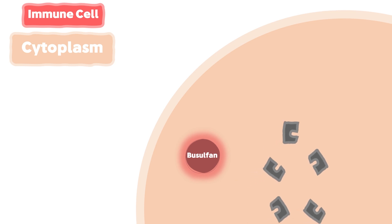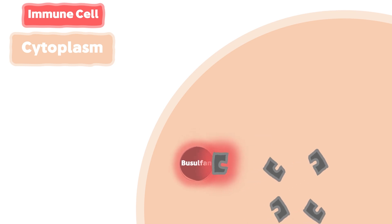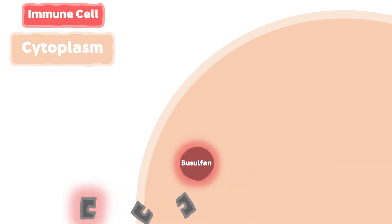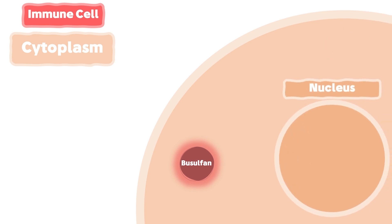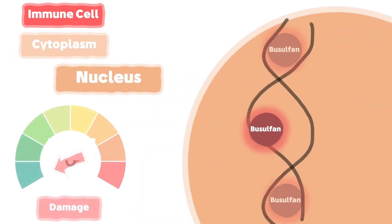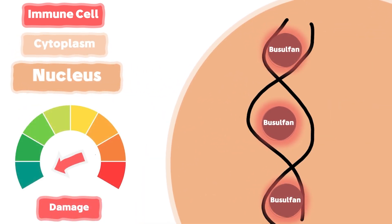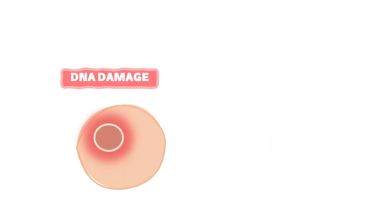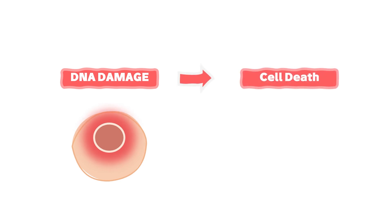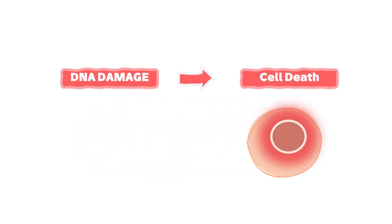Busulfan binds and damages the proteins in the cytosol of the cell. In addition, Busulfan also enters the nucleus, where it binds with the DNA, causing damage to the cell. When this damage exceeds a certain threshold, the cell will not be able to survive and it will commit suicide.